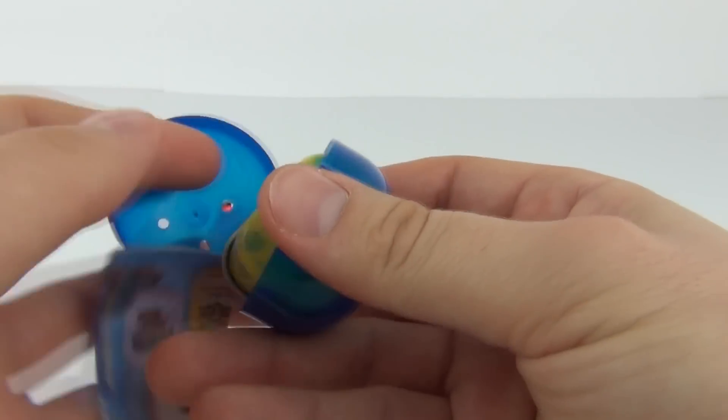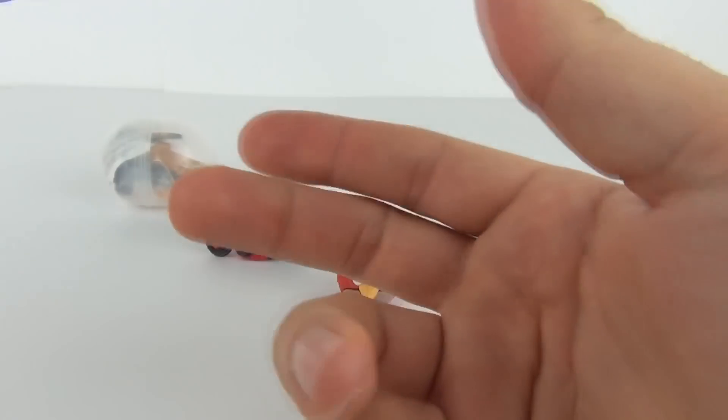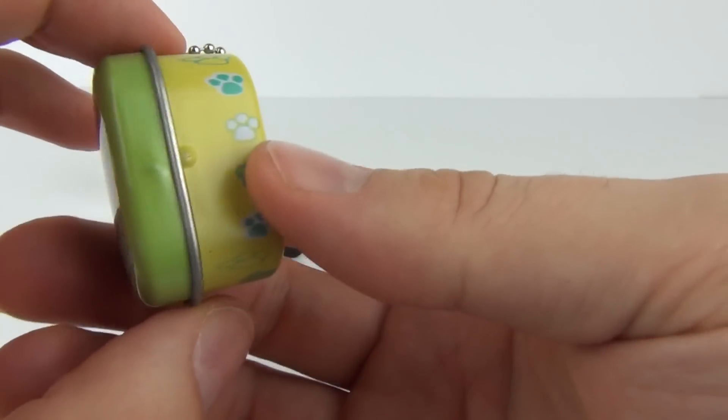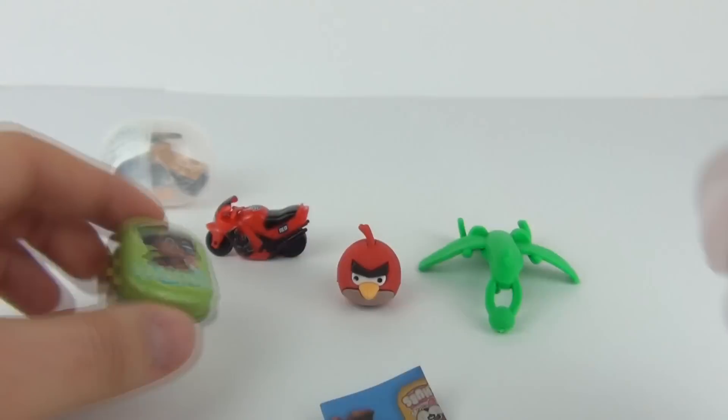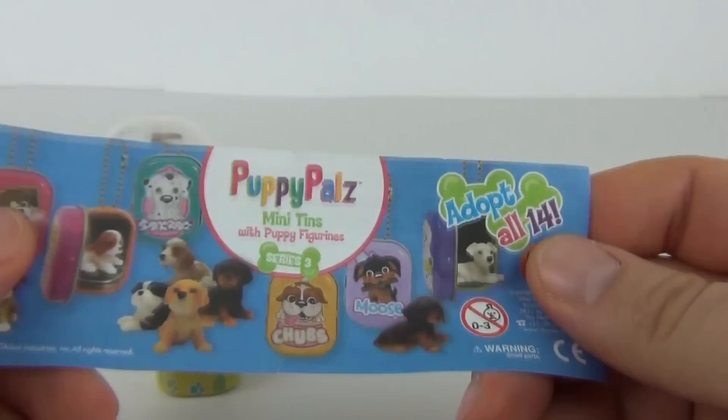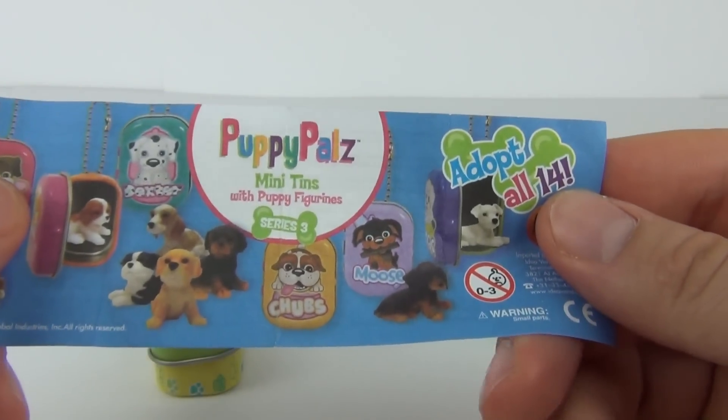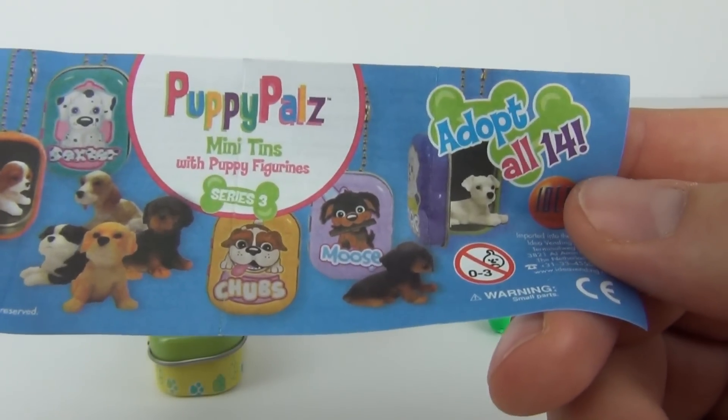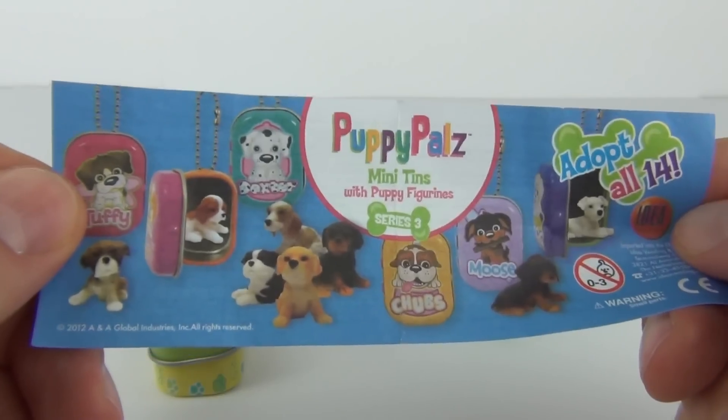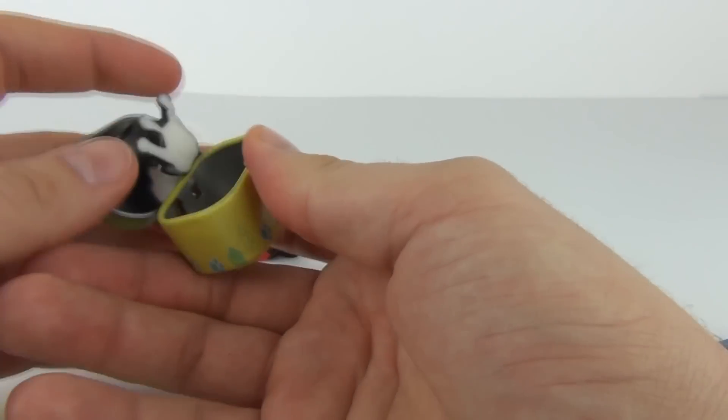Again, all these were a pound. And this looks really cool. Inside we have this musket. It's called Tin with a chain on it as well. And what do we have? We have Puppy Pals Mini Tins with Puppy Figurine. Inside this is Series 3 and it says adopt all 14 puppies to adopt. And there inside is our tiny little puppy.